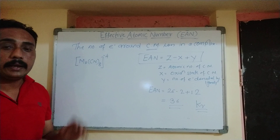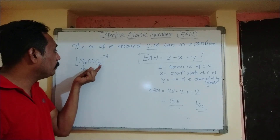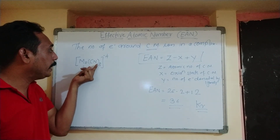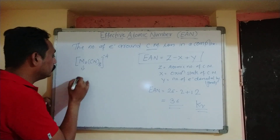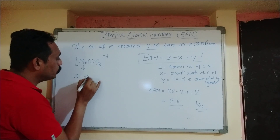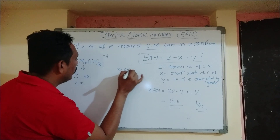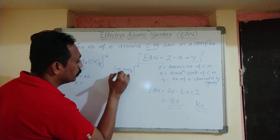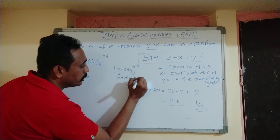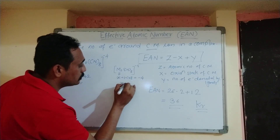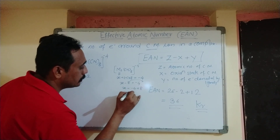The next example is [Mo(CN)₈]⁴⁻. The central metal here is molybdenum. The atomic number of molybdenum is 42. CN⁻ is a negative ligand with charge minus 1. To find the oxidation state X: X plus (minus 1) into 8 equals minus 4, so X minus 8 equals minus 4, giving X equals plus 4.